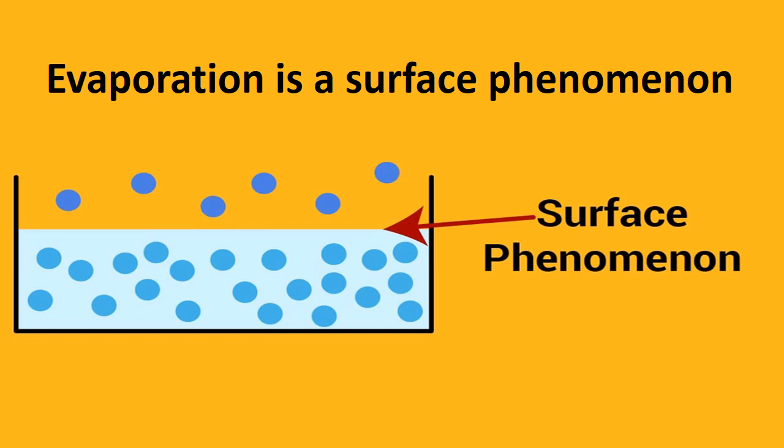While if I talk about boiling, boiling is a bulk phenomenon. Now, as evaporation depends upon surface, with increase in surface area, evaporation increases. Let's understand it by examples.